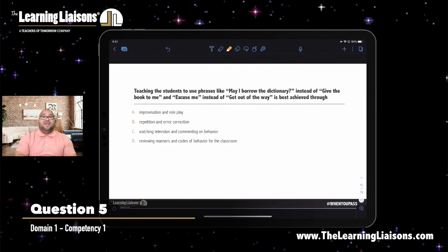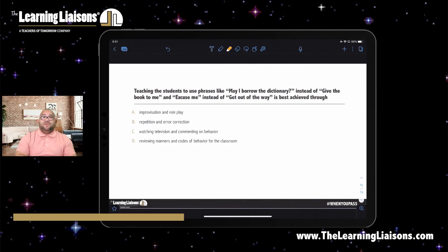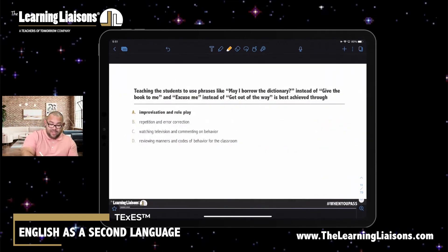Teaching the students to use phrases like, may I borrow the dictionary instead of give the book to me and excuse me instead of get out the way is best achieved through improvisation and role play. One of the things that you have to definitely keep in mind when you are teaching English language learners is their cultural background. And you cannot assume that they understand sometimes the phrases that they're using. So improvisation, role play is a perfect strategy that you as a teacher can use to teach them not only how they should be using the language, but also, are they using it in the right context? So improvisation and role play always should be done contextually.